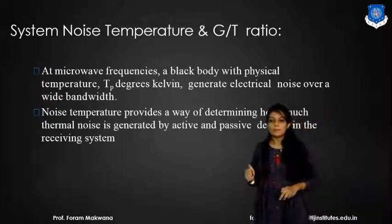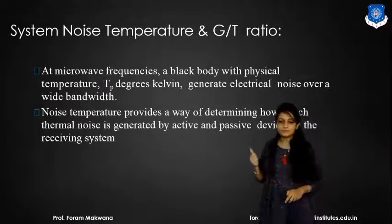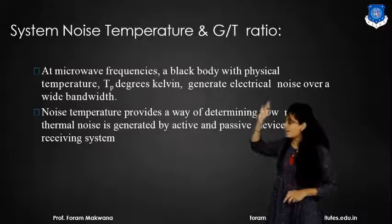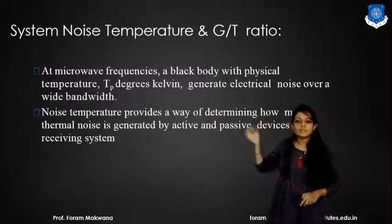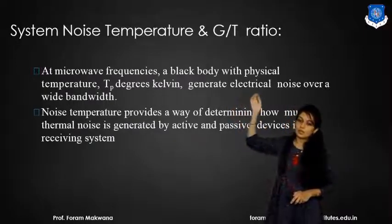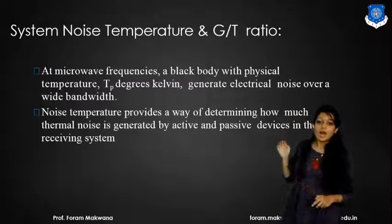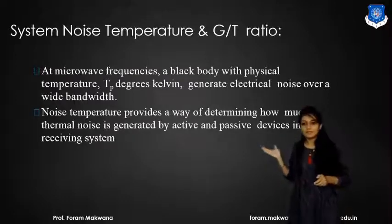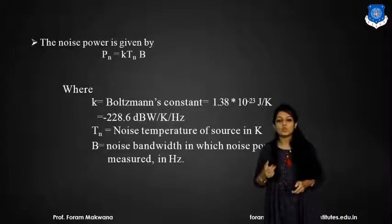The next topic is the system noise temperature and G/T ratio. At microwave frequencies, a black body with a physical temperature — we can say T degrees Kelvin — will generate electrical noise over a wide bandwidth. This noise temperature provides a way of determining how much thermal noise is present and distributed by the active and passive devices in the receiving system. So we need to consider the value of noise power.